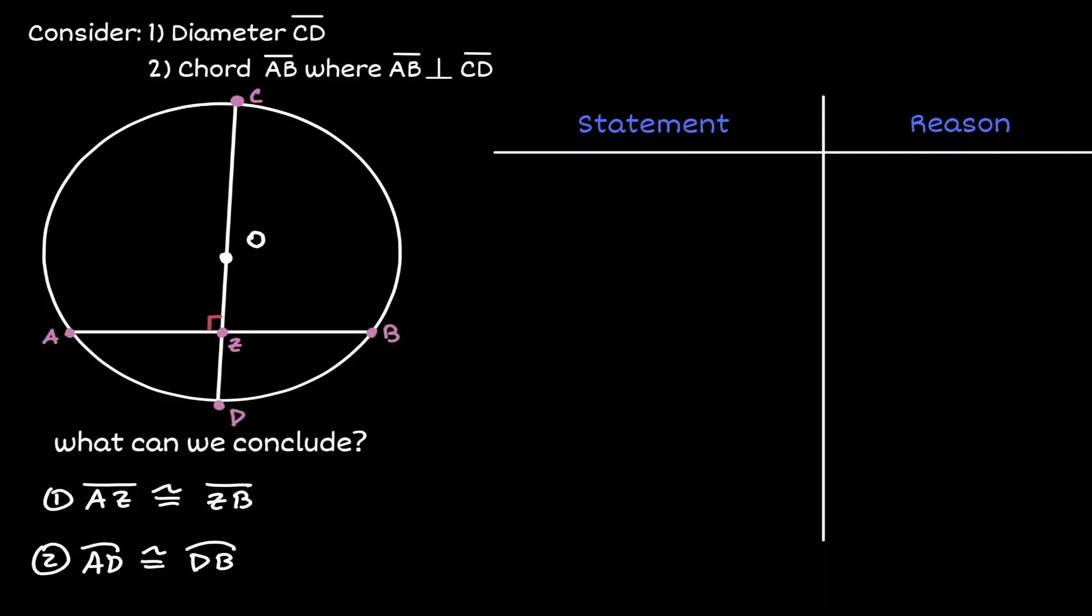In other words, a diameter will always bisect a perpendicular chord and its arc.